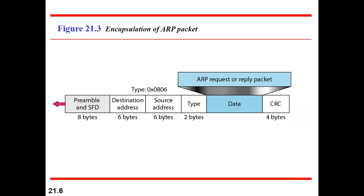ARP request and reply packets are encapsulated into a data link layer frame. The network layer passes its packet to the data link layer, which encapsulates the ARP request into the frame. The Ethernet frame format includes fields such as preamble, destination address, source address, and type — and the ARP request or reply packet is carried in the data field of this frame.